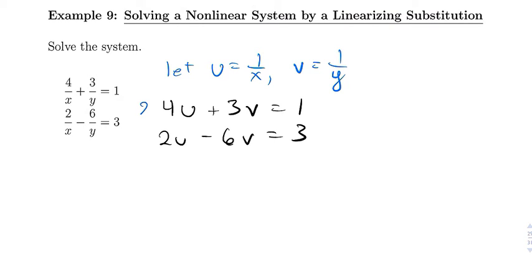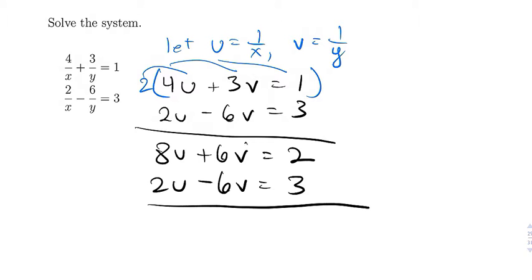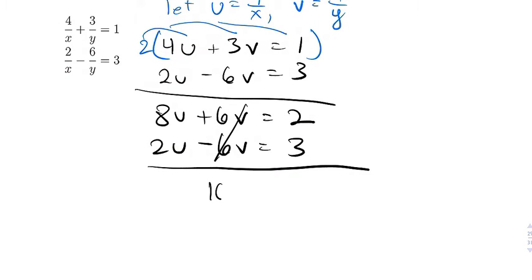So now we can just eliminate as we used to. I'm going to multiply that first row by 2 and distribute. So then what that'll give us, we'll get 8u plus 6v equals 2, and then we'll get 2u minus 6v equals 3. And we add these, this is going to cancel, and we'll get 10u equals 5, so u equals 1 half.